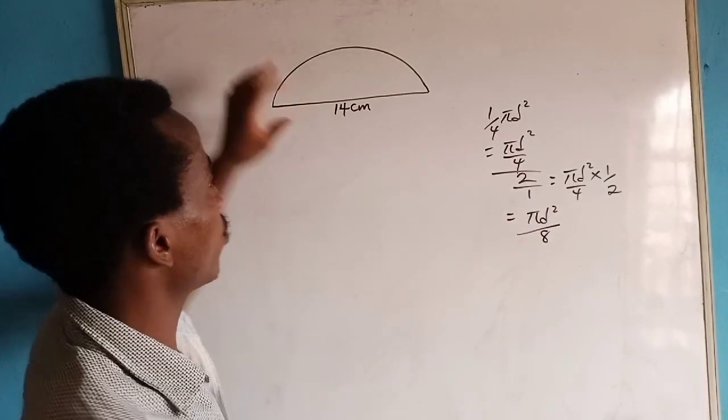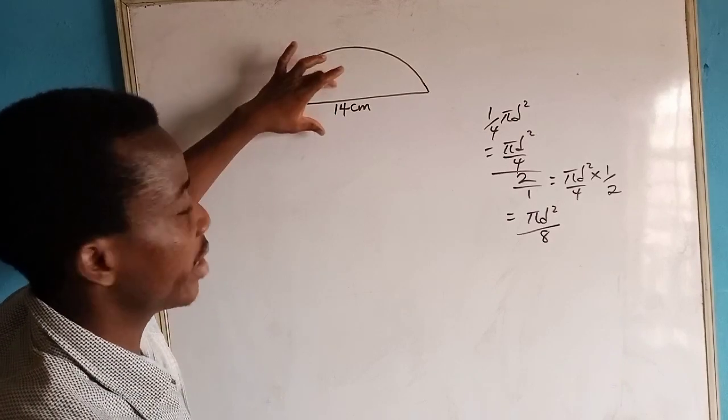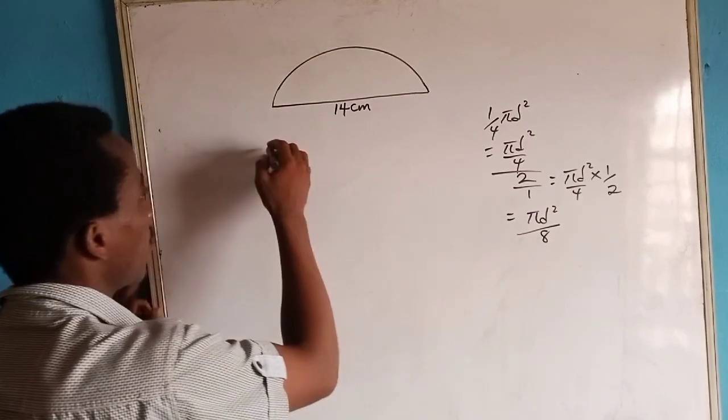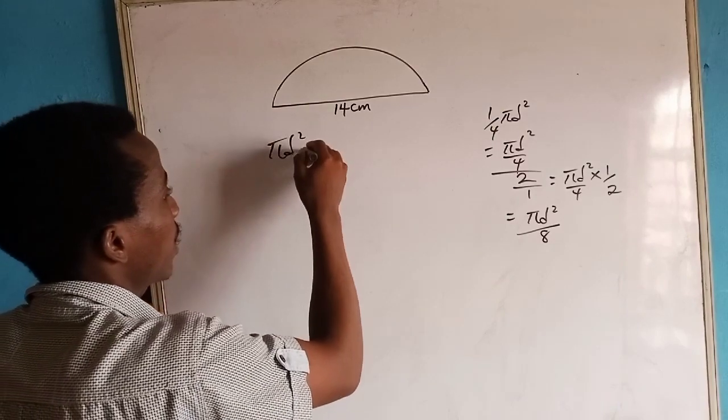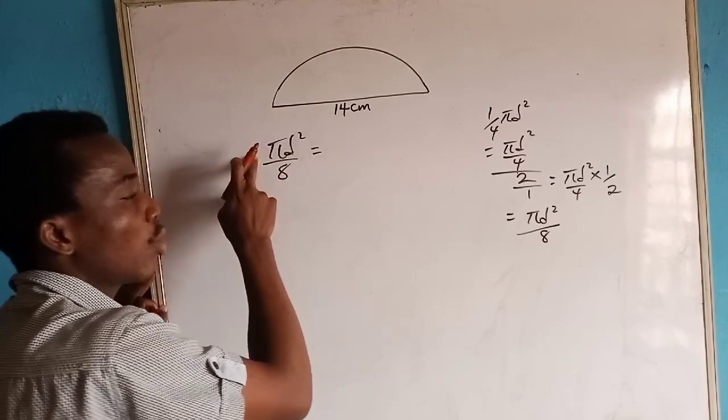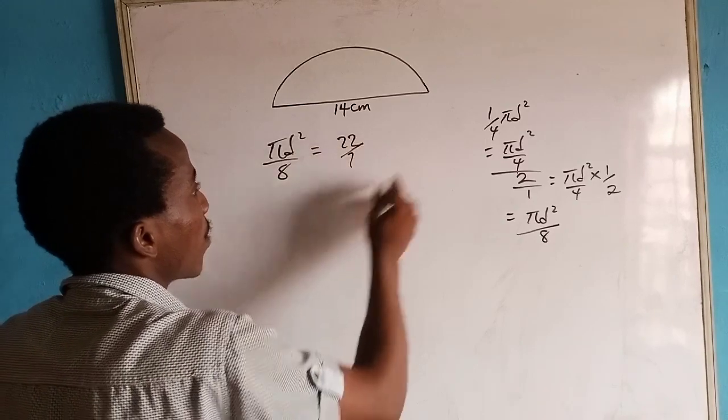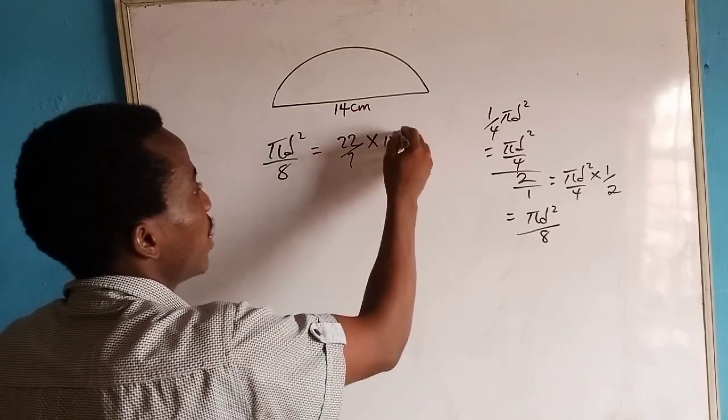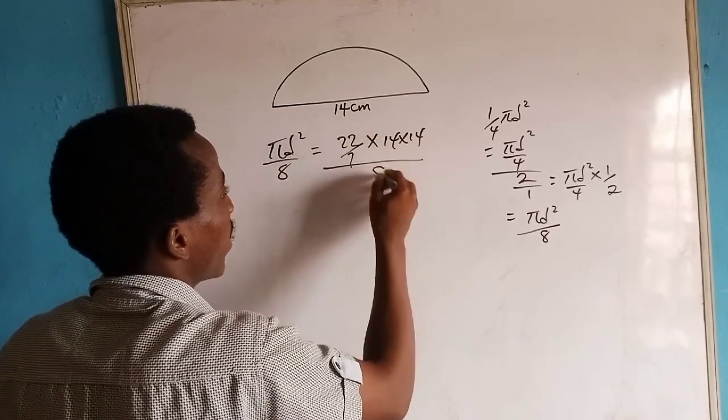This is the formula we can use to find the area of this semi-circle of diameter 14. Using this formula, π d squared over 8, becomes π is 22 over 7 times 14 squared, 14 times 14, all over 8.